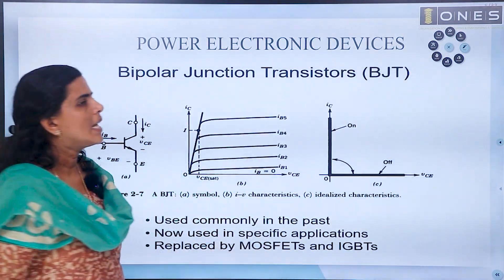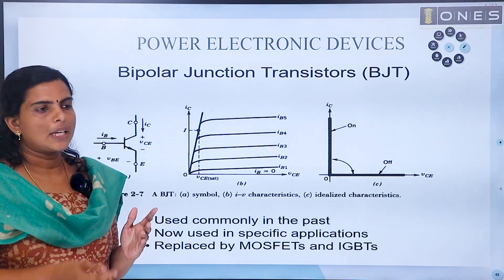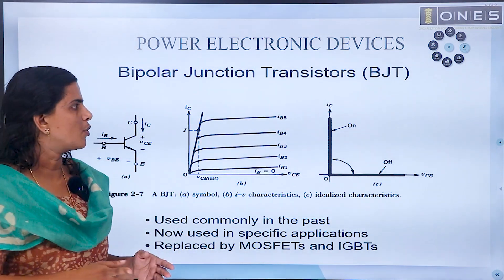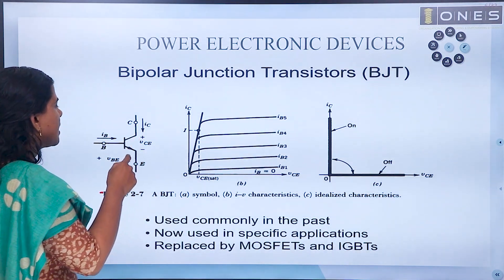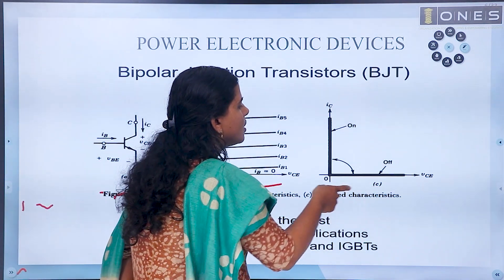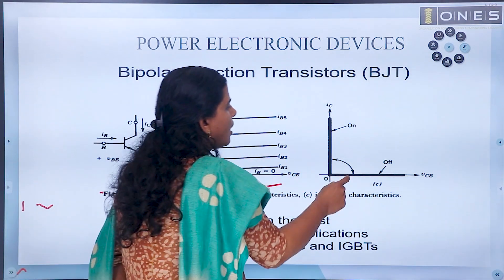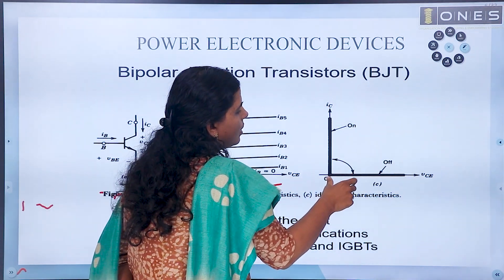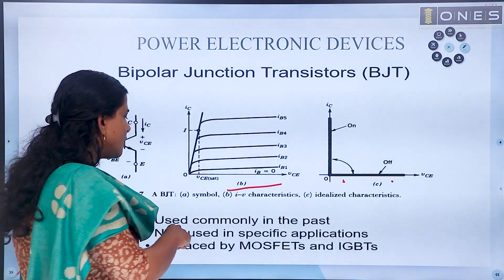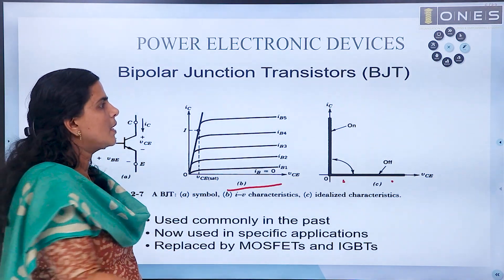The diode is an uncontrolled switch with no control signal. The thyristor is semi-controlled — turn on is controlled but turn off is not directly. Then there are fully controllable switches where both turn on and turn off can be controlled: BJT, MOSFET, and IGBT. For BJT, the terminals are emitter, base, and collector. In the ideal characteristics it can block VCE and pass forward current — on time IC is passed and off time VCE is blocked, operating in saturation and cut-off regions. BJT is now largely replaced by MOSFET and IGBT.